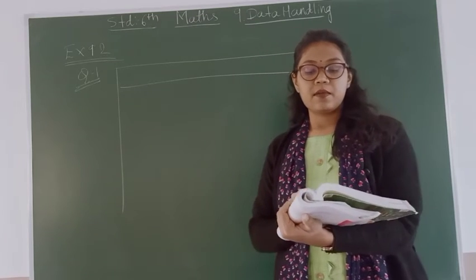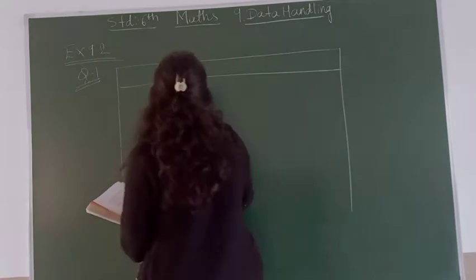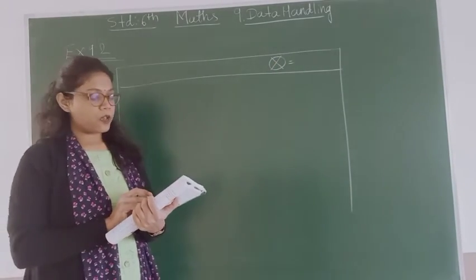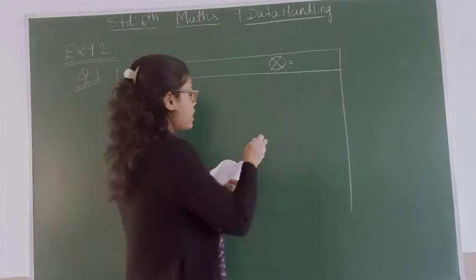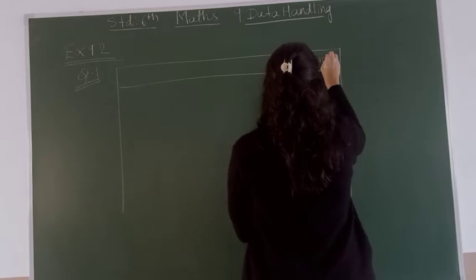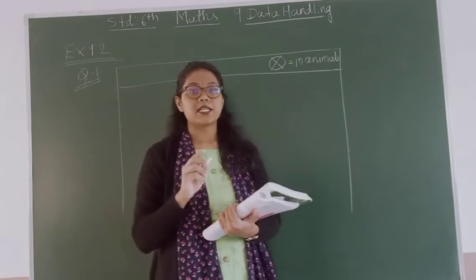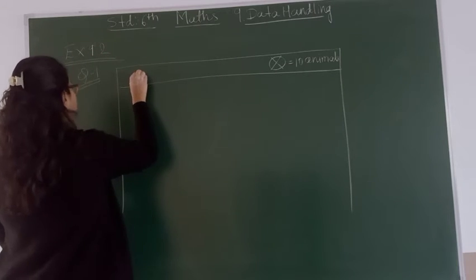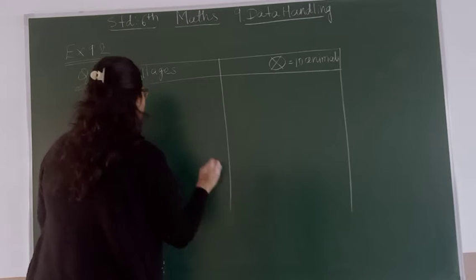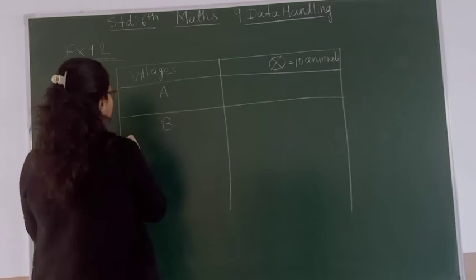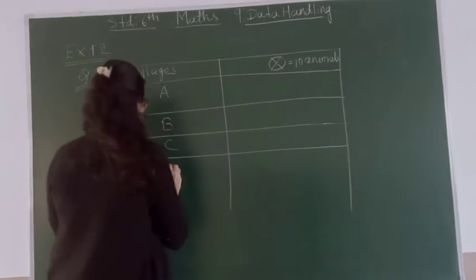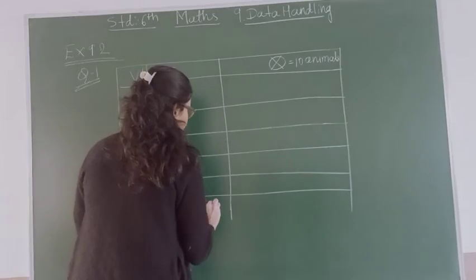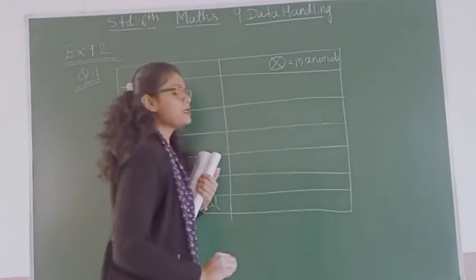Now what is the question? Prepare a pictograph of these animals using one symbol, and that one symbol represents 10 animals. So in the first column you have to write the villages A, B, C, D and E, and here at last make a separate row for the total number of animals.